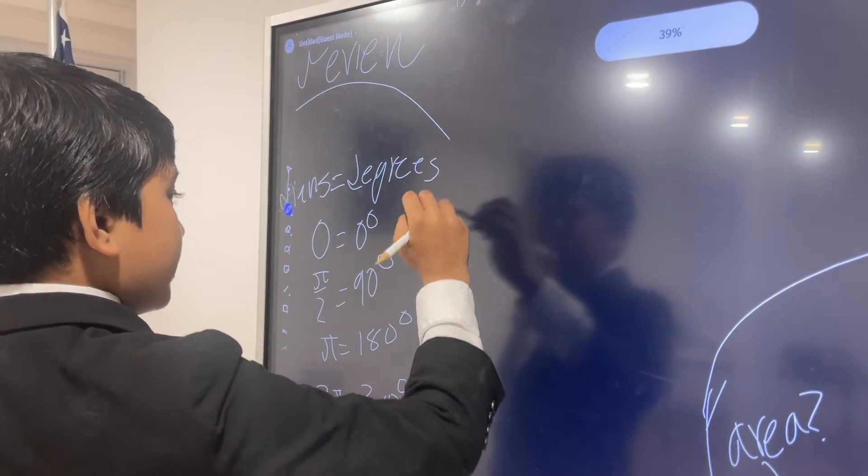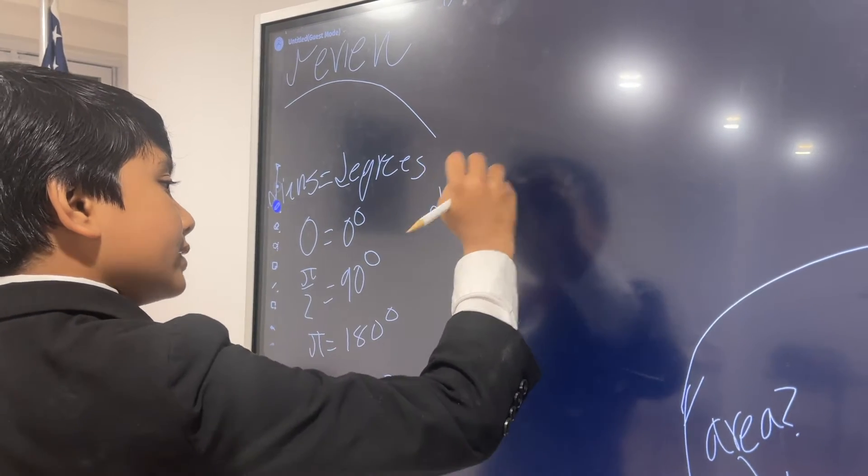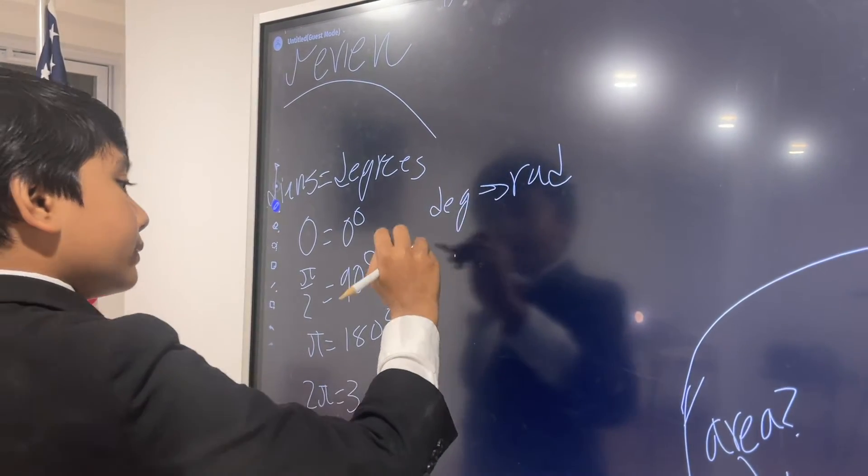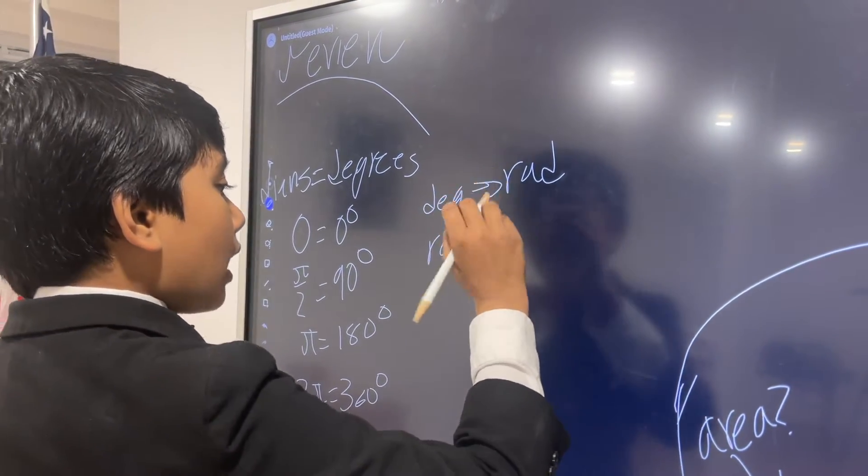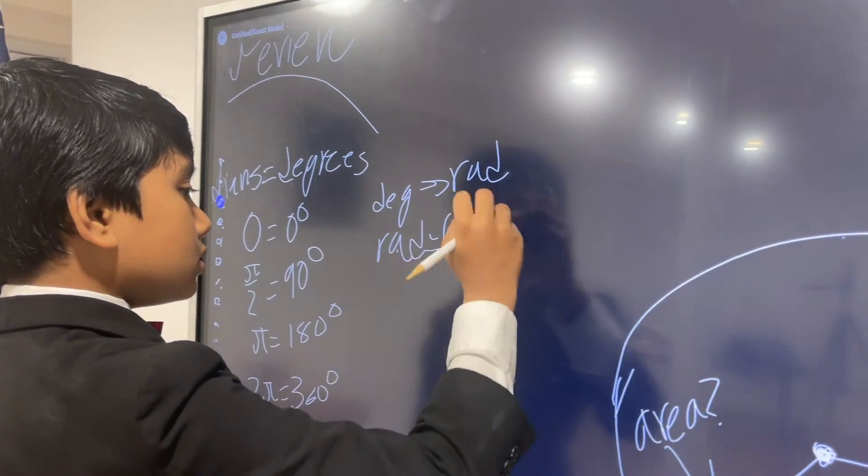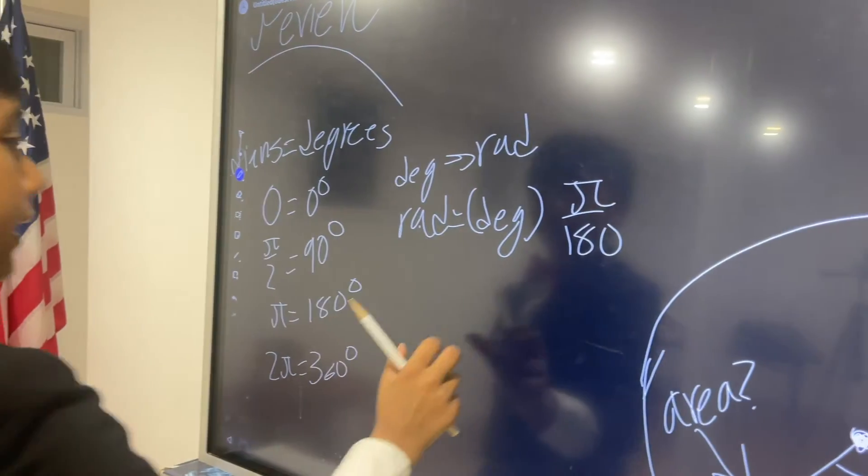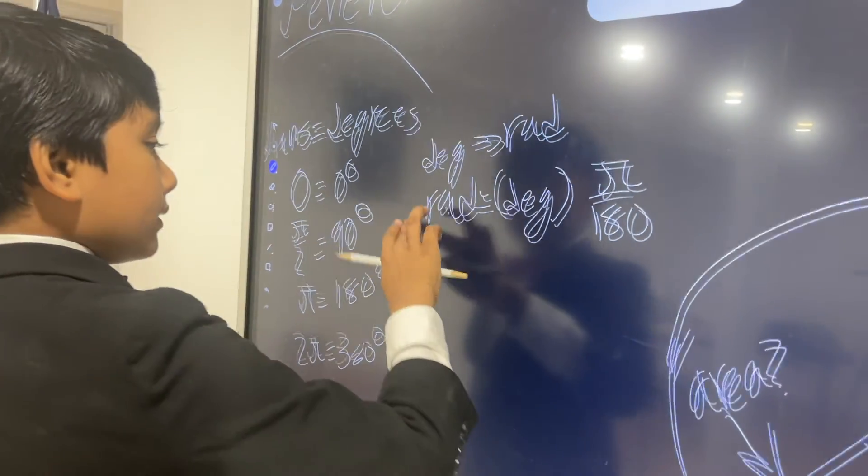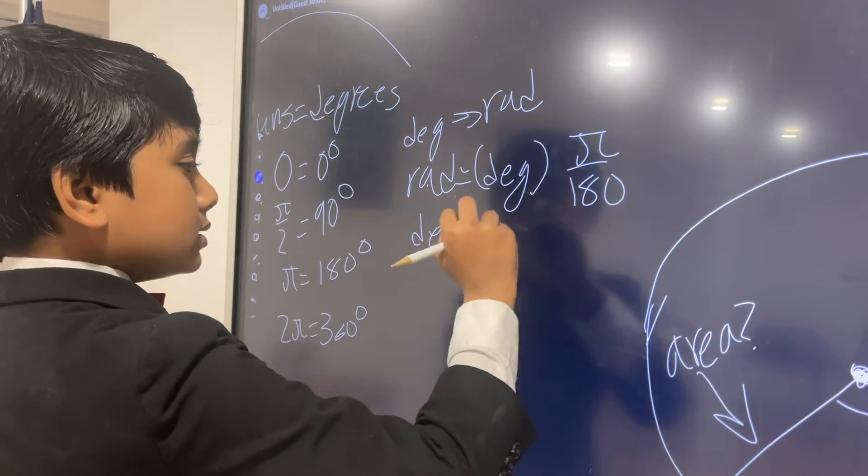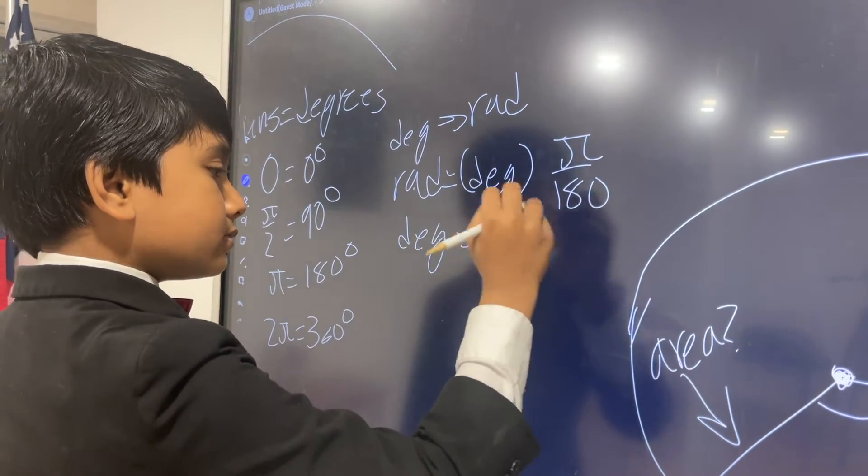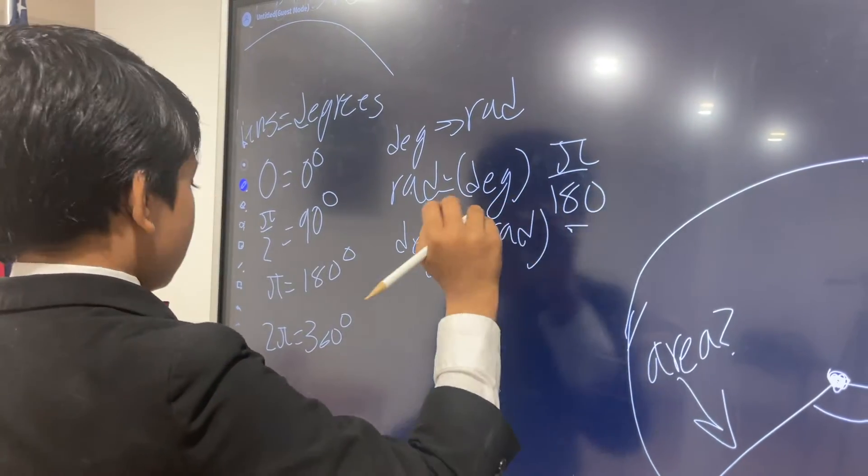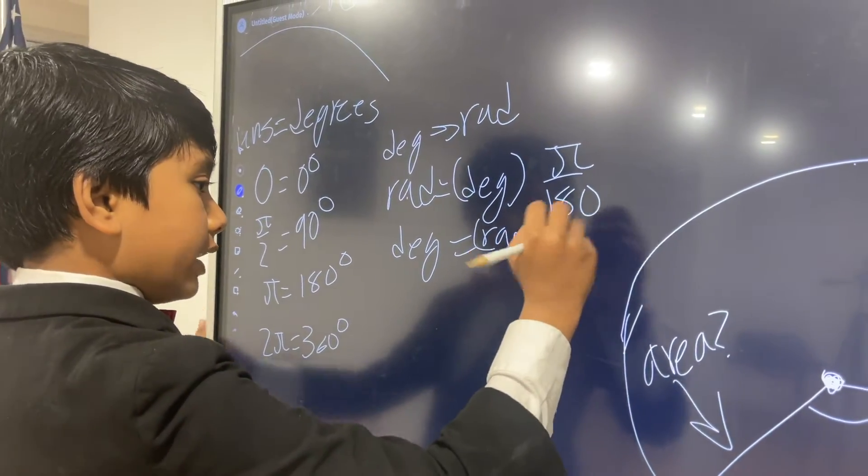So, converting radians into degrees is simple. Degrees to radians simply multiply your degrees by pi over 180. And degrees is just vice versa, not pi over 180, but 180 over pi.